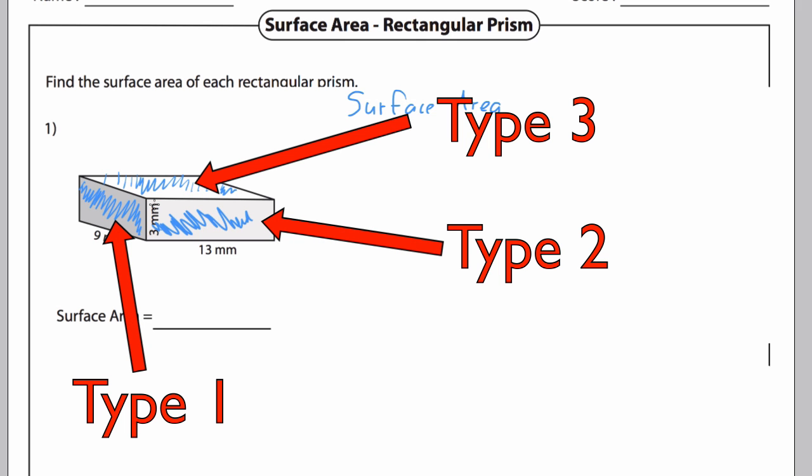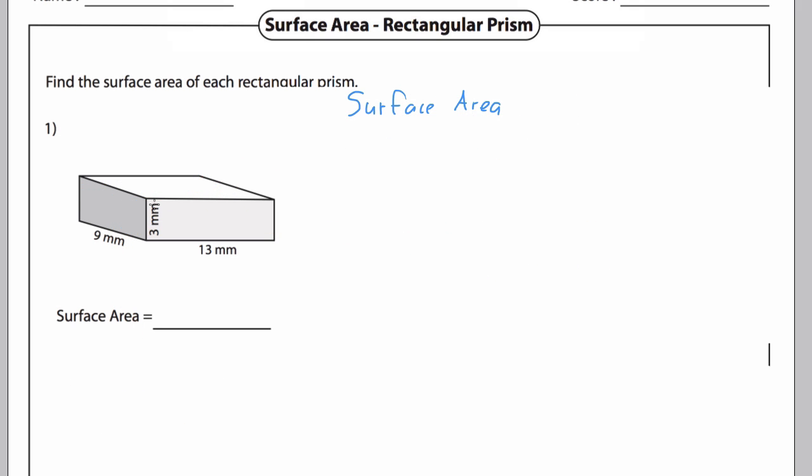The top and bottom are equal and the same, the front and back are equal and the same, and the sides are equal and the same. I want to find type 1 here, which is going to be 9 millimeters and 3 millimeters.